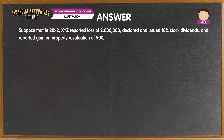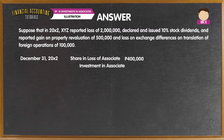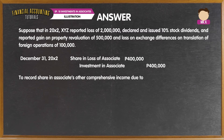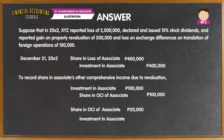Suppose that in 20X2, XYZ reported a loss of P2 million and declared and issued 10% stock dividends, and reported a gain on property revaluation of P500,000 and a loss on exchange differences on translation of foreign operations of P100,000. The entry on December 31 to record the share in loss of associate is a debit to the share in loss of associate account of P400,000 and a credit to the investment in associate account of the same amount. To record the share in associate's other comprehensive income due to revaluation, we debit the investment in associate account for P100,000 and credit the share in OCI of associate — revaluation surplus account for the same amount. Lastly, we record the share in associate's other comprehensive income due to exchange differences on translation of foreign operations by debiting the share in OCI of associate — translation of foreign operations account for P20,000 and crediting the investment in associate account for the same amount.